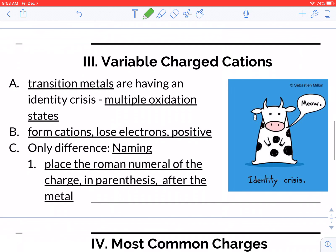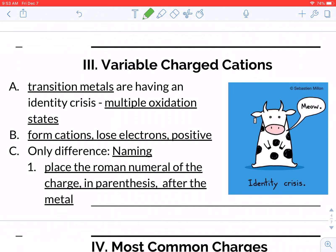So moving on to our next thing. This is relating to our central question about the variable-charged cations. So this has to do with our transition metals. Essentially, they don't always have one charge. They can have different charges. Because they're metals, they are going to form cations, so they do that by losing electrons, and they'll end up with a positive charge.